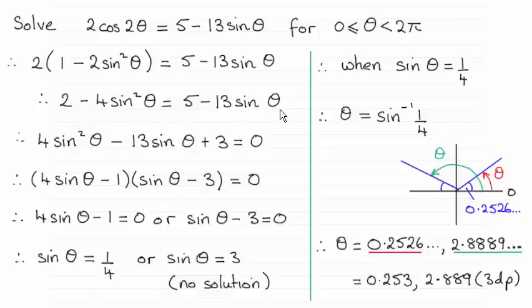We rearrange it so that we can form this quadratic equation which factorizes, and then putting each factor equal to 0 leads us to sin θ equals a quarter or sin θ equals 3.